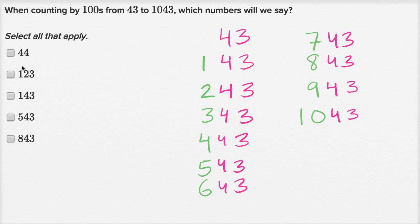So which of these numbers did we see when we counted from 43 to 1,043? Well, we didn't see 44. We didn't see 123. But we did see 143. We saw 543. And we saw 843. So we saw these numbers.